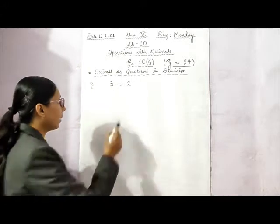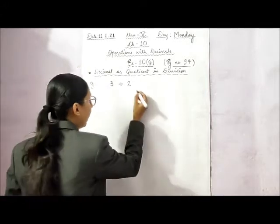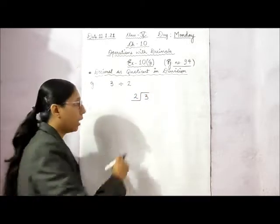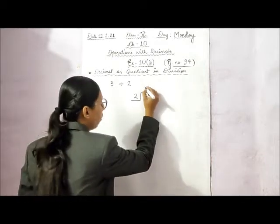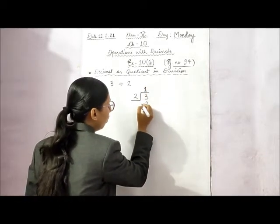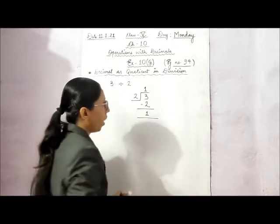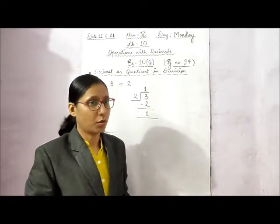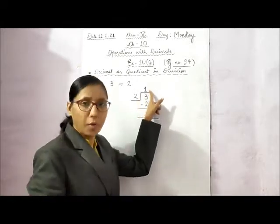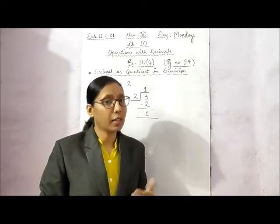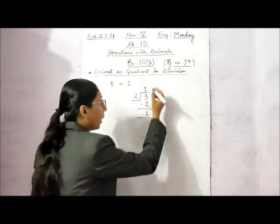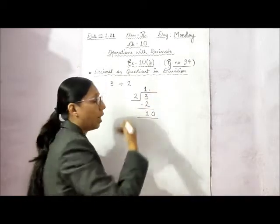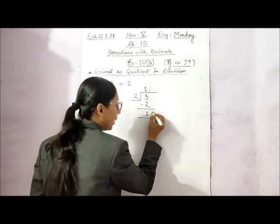Suppose if I am dividing 3 by 2, we will write 2 as the divisor and 3 as the dividend. Now in the table of 2, 3 never comes. So we will take one time 2 only and the remainder will be 1. There is a remainder, but we can make it a decimal number also.